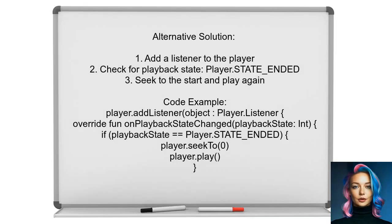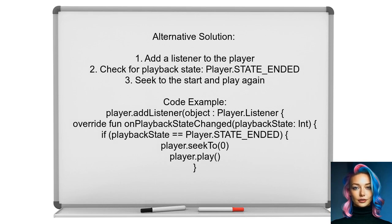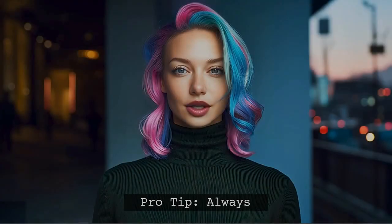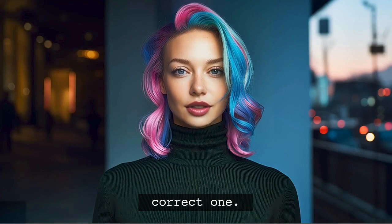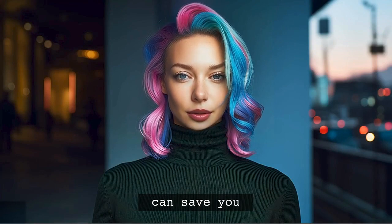An alternative solution from another user suggests handling the playback-ended event. They recommend adding a listener to the player that checks if the playback state is ended. If it is, the player should seek back to the start and play again. Here's a pro tip: always double-check your media source and ensure you're preparing the correct one — this small step can save you a lot of headaches.